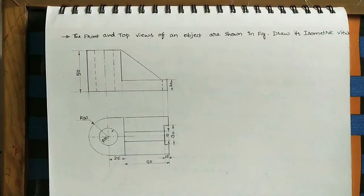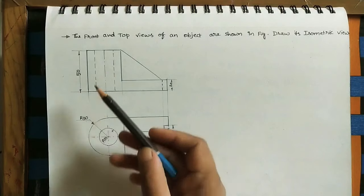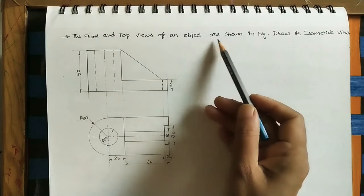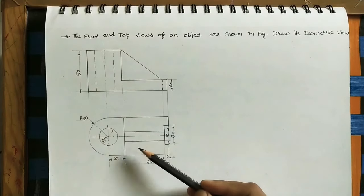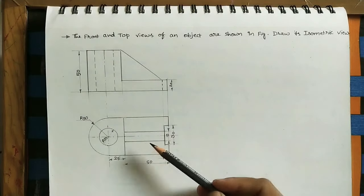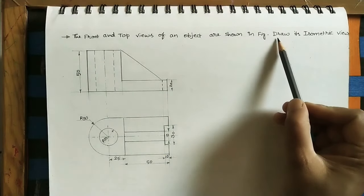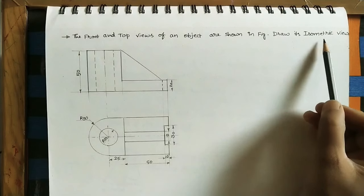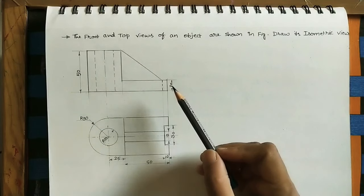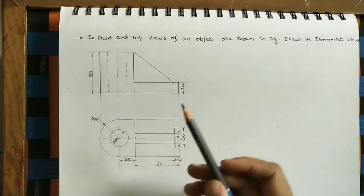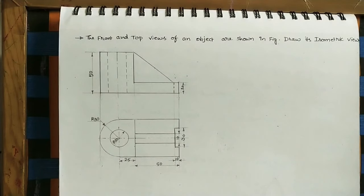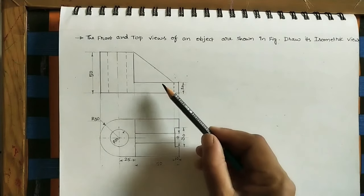Hi, welcome to my channel. Let us discuss how to do the isometric view of the given diagrams. Here, take the given question: the front view and top view of an object are shown in the figure. This is the front view, this is the top view — these are the two given diagrams. We need to do the 3D diagram by using this front view and top view.